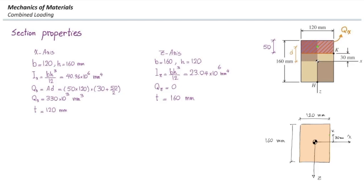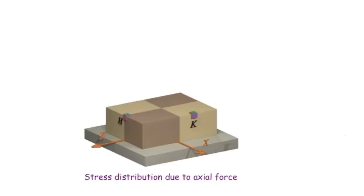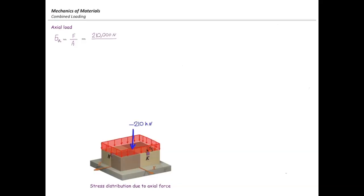In the last part, we determine the stresses. First, the stress produced by the axial load is F over A. The section is subjected to negative 210 kN, producing a uniform compressive stress: 210,000 N divided by the area (120 × 160 mm), giving 10.94 MPa in compression.